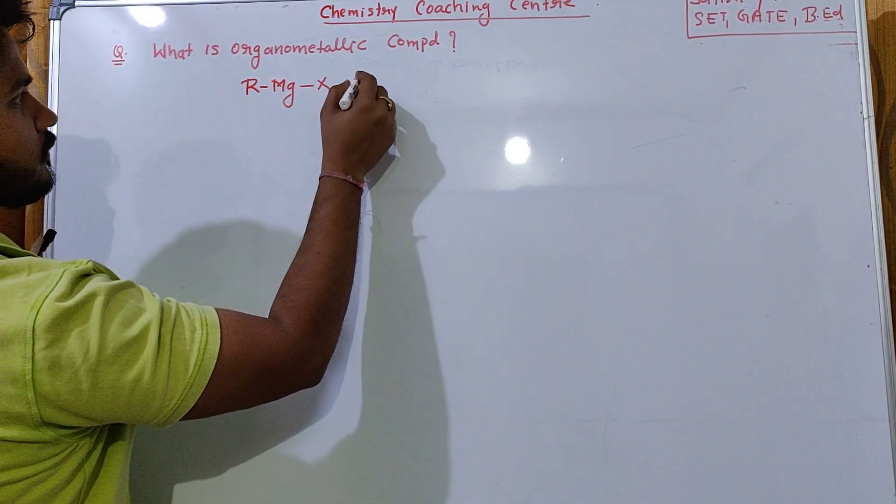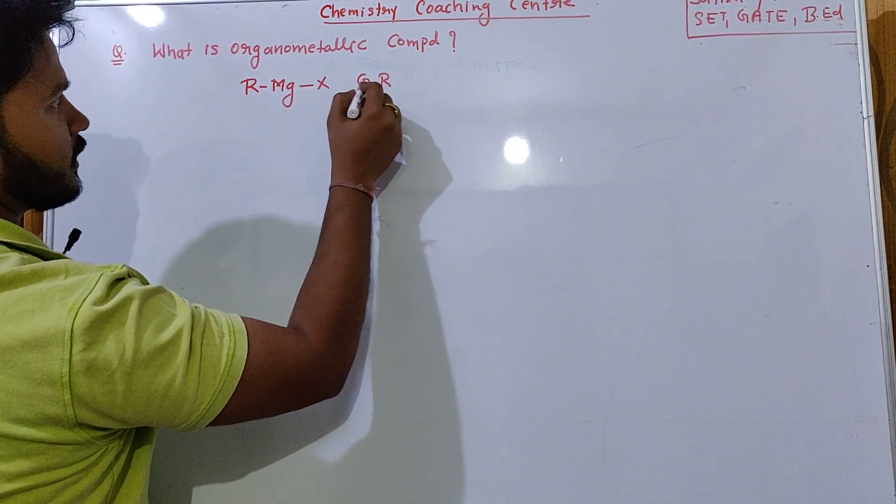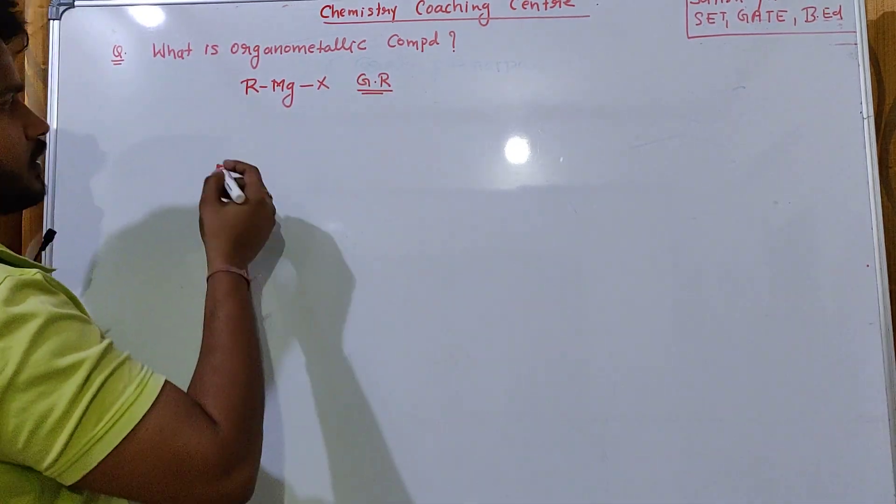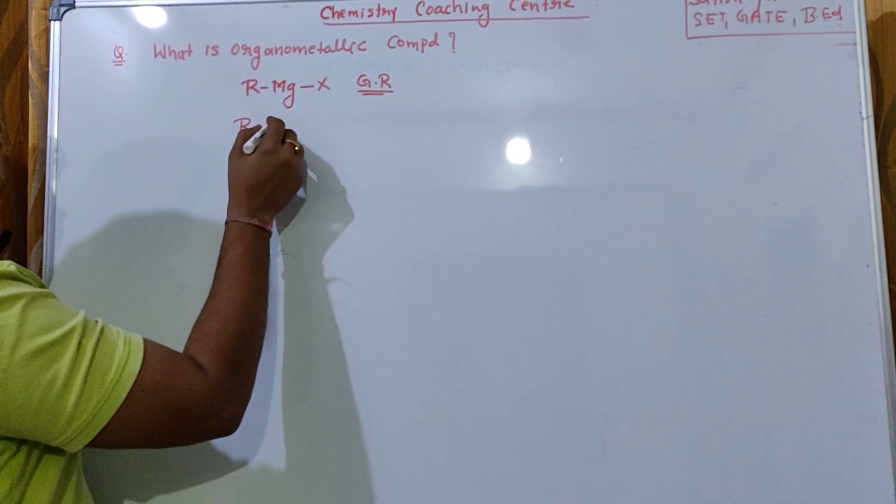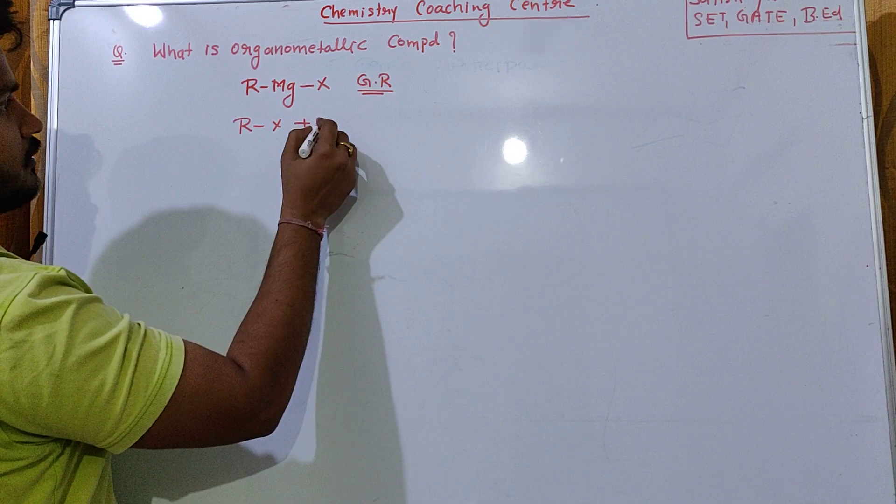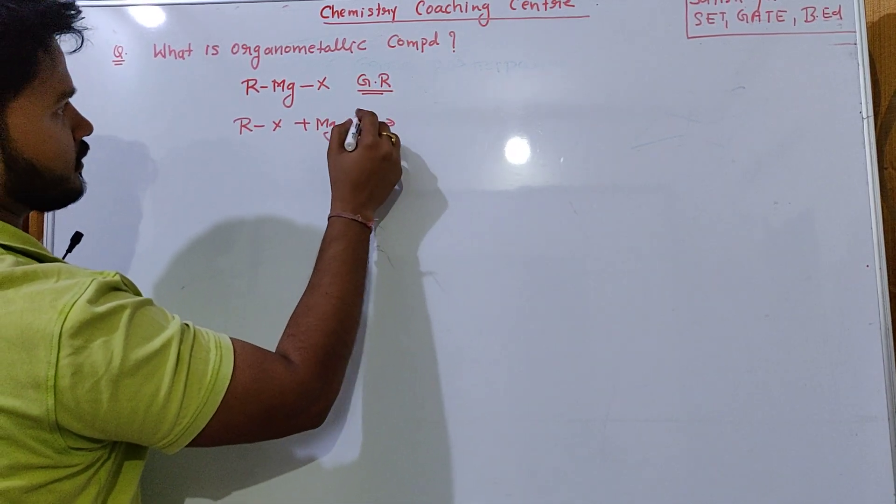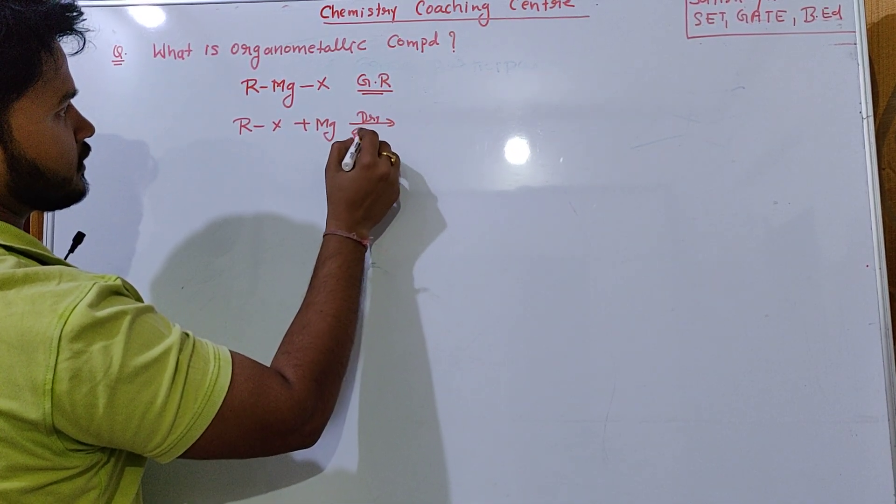So R-Mg-X is a kind of Grignard reagent. When you take an alkyl halide and you add with a magnesium metal in the presence of dry ether, then you get this R-Mg-X.